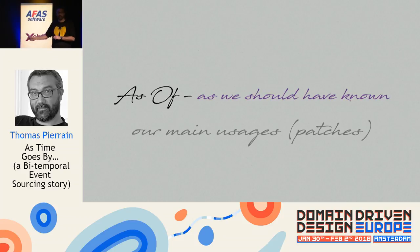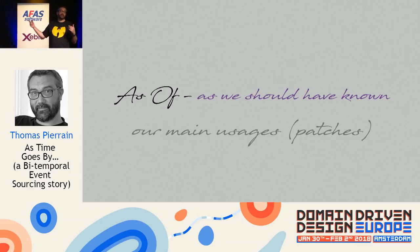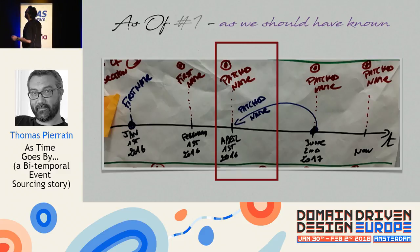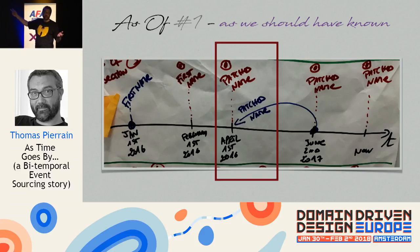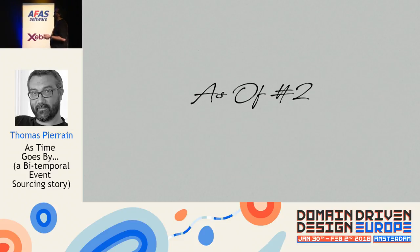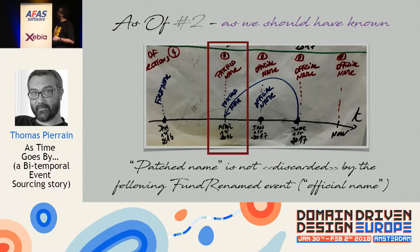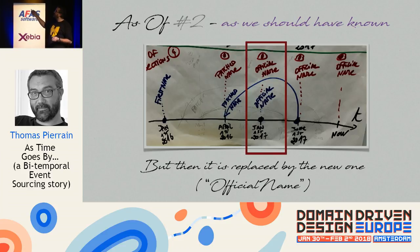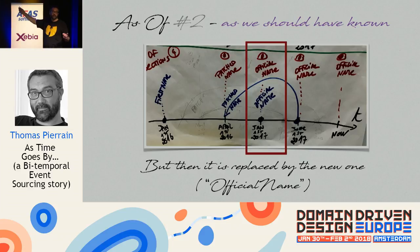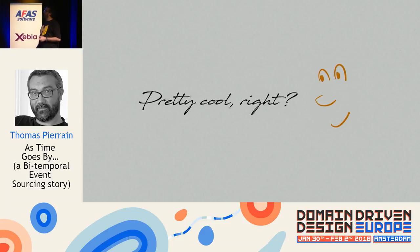ASOF — 'as we should have known' — our main usage. On April 1st, in ASOF projection mode, we should have known the name was 'patch name', so the projection must return that value. If 'official name' comes after, patch name is not discarded — and then 'official name' replaces it going forward. We were very happy with our model and examples.